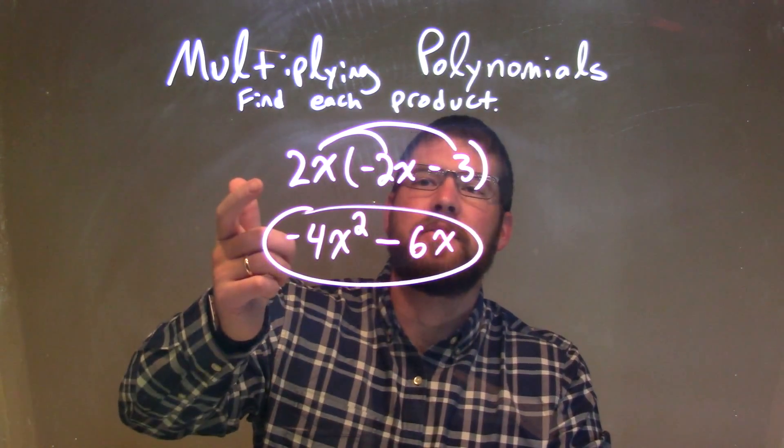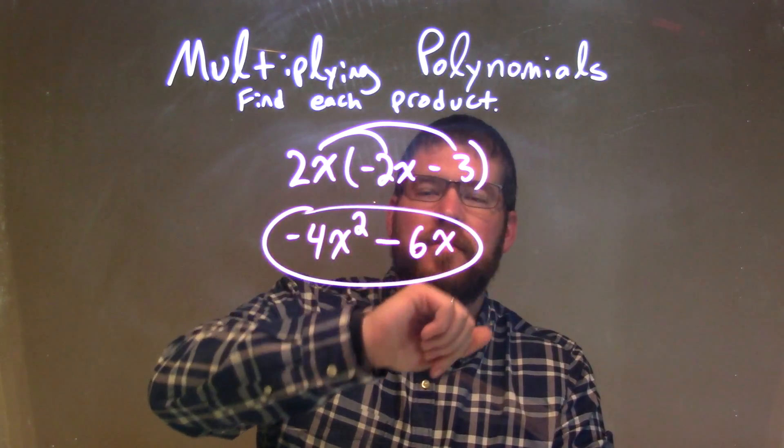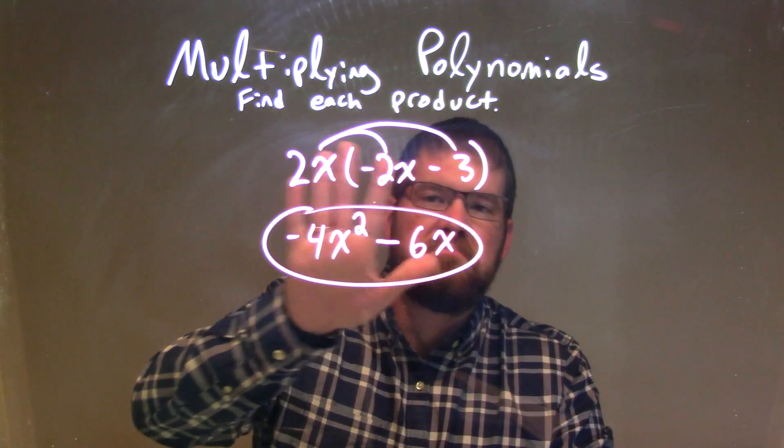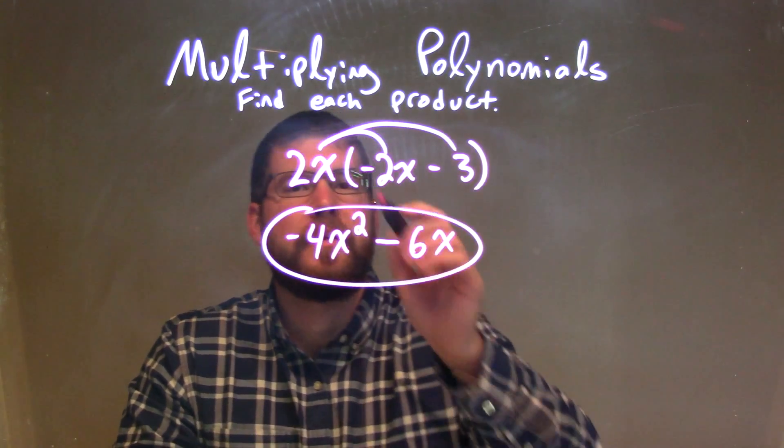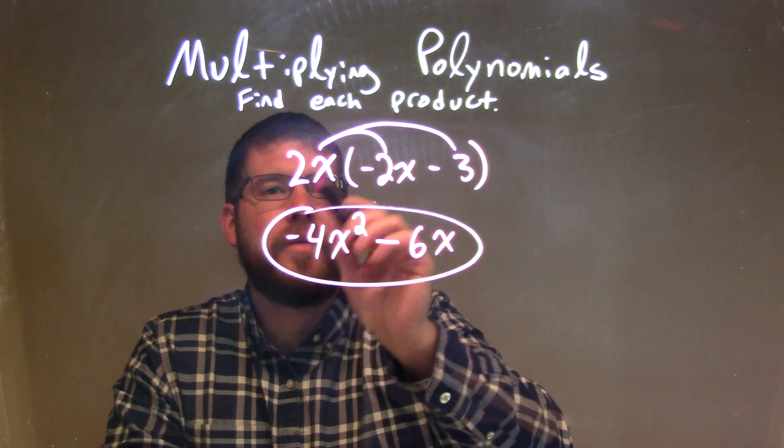So let's recap. We're given 2x times the parenthesis, negative 2x minus 3. Well, I have nothing to simplify inside of the parenthesis, so I'm going to distribute now with the multiplication that's going on right here outside of the parenthesis.